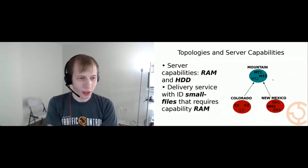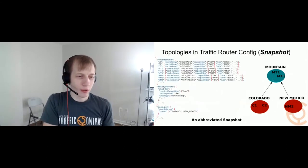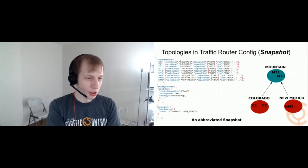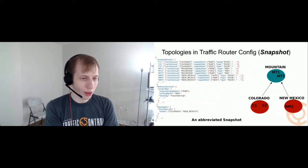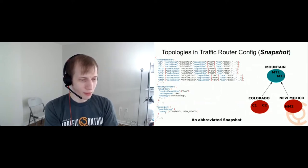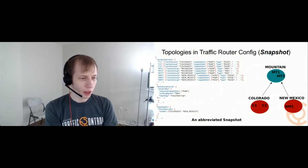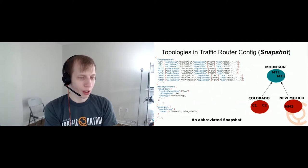So if you did that, this is what the snapshot would look like. I'm only focusing on the sections that are relevant here. Notice that it includes all of the servers, not just the ones with the RAM capability, because Traffic Router and Traffic Monitor are going to need to calculate which servers are involved. Over here in our topology section, it says the nodes are the Colorado cache group and the New Mexico cache group — notice it does not say anything about the Mountain cache group. We only need to tell Traffic Router about the edges.